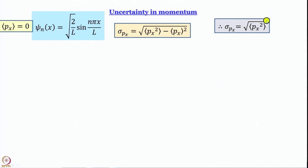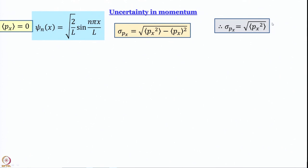The expression for uncertainty in momentum becomes the square root of the average value of px squared. Please do not think that the square root and the square will cancel each other — they will not. Remember the task from the last module: take a set of numbers, work out the average of squares, then the square of the average — they are not the same. This is a root mean square quantity, analogous to the root mean square velocity in kinetic theory of gases.